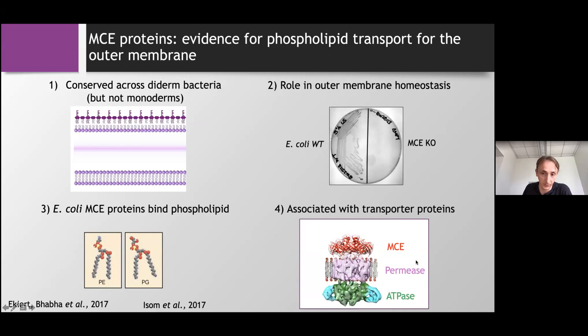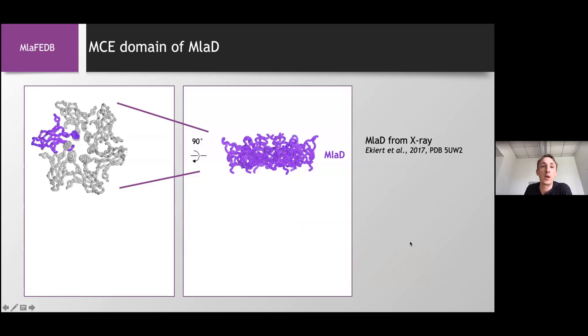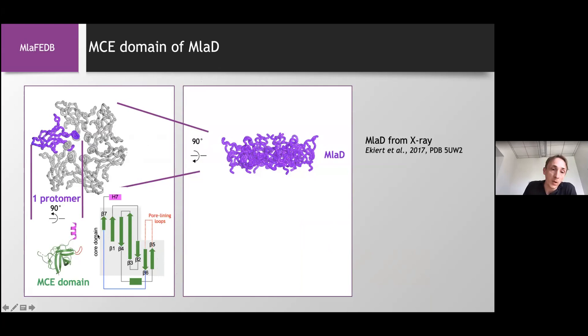So how does the MCE domain look like? So the first one, which was the first structure, which was done by Damien Eckert and Girababa a few years ago by X-ray. And here you have a top view and a side view. And you can see that the MCE here, it's called MLAD, it forms a hexamer. And you see that each protomer here contains what's called this famous MCE domain, which is made of seven beta strands. Can note also that in addition to the seven beta strands, you have what's called a pore lining loop here, which is located toward the pore and kind of defines the diameter of the pore of the complex.